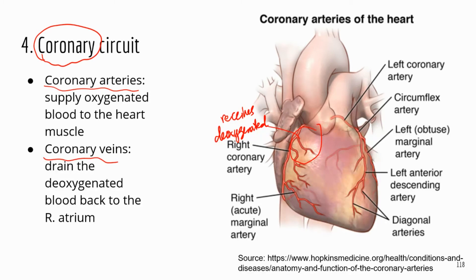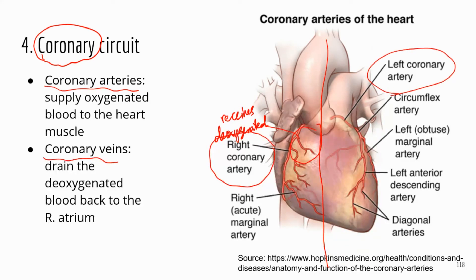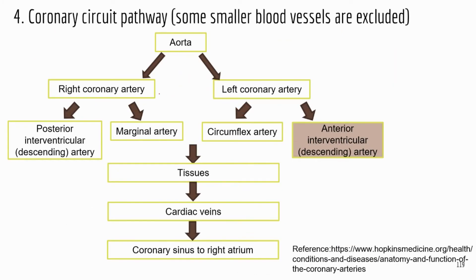Coronary arteries bring oxygenated blood to the heart muscle; coronary veins drain deoxygenated blood back to the right atrium. Looking at this diagram, I'm going to circle the important arteries because if one of these arteries is blocked, the person may experience a heart attack. On the right side you have the right coronary artery; on the left side you have the left coronary artery. These are the two main arteries and they branch off the aorta.